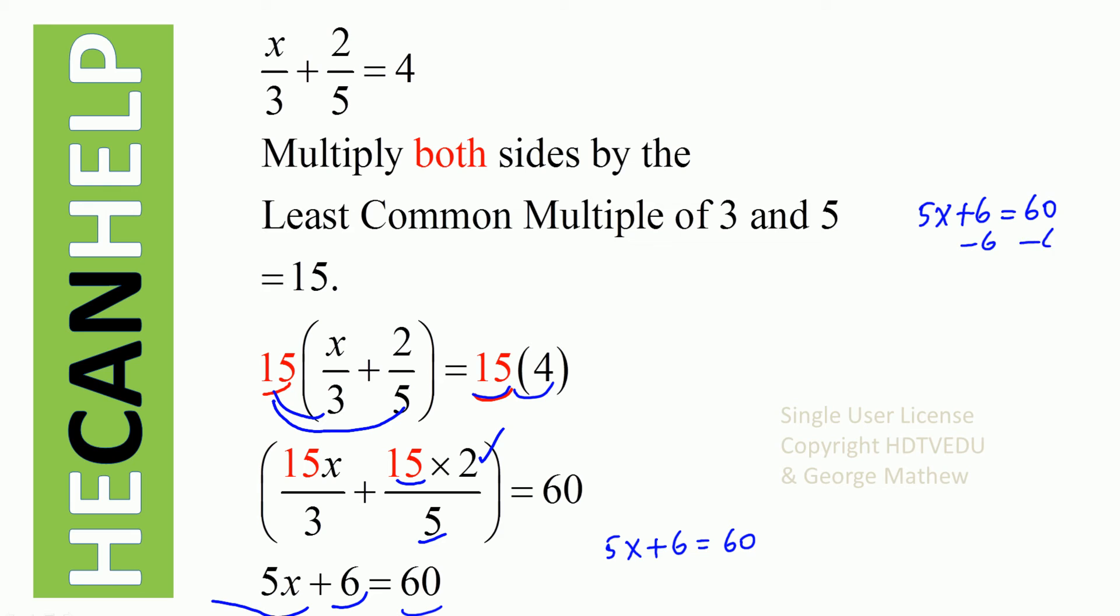Subtract 6 from both sides and you get 5x is equal to—what is 60 minus 6? 54.